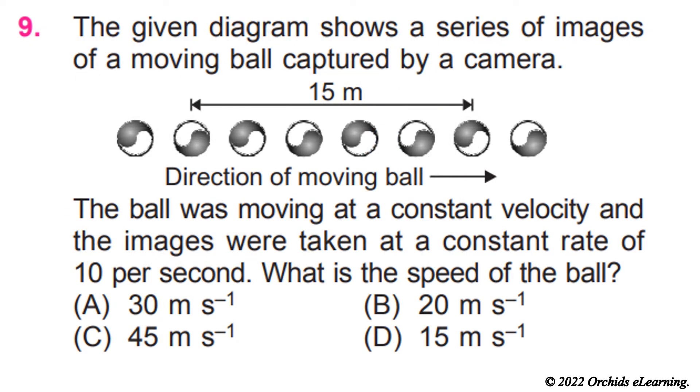The given diagram shows a series of images of a moving ball captured by a camera. The ball was moving at a constant velocity and the images were taken at a constant rate of 10 per second. What is the speed of the ball? Answer A, 30 meters per second.